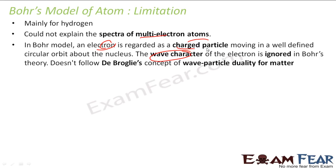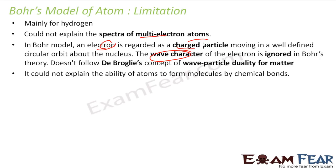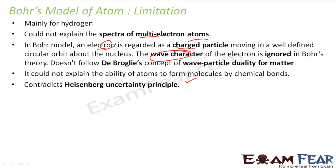The duality principle of electrons was in fashion at that time, but Bohr ignored it completely and considered electrons only as particles. It was also not able to explain the ability of atoms to form molecules by chemical bonds. And it contradicts the Heisenberg uncertainty principle, which was a very strong principle at that point of time.